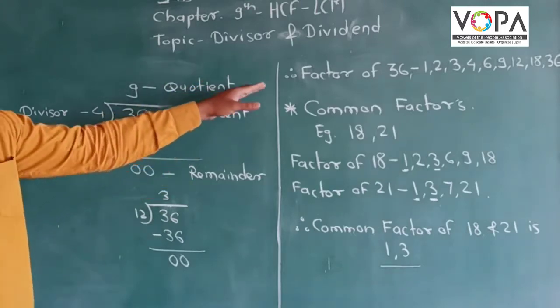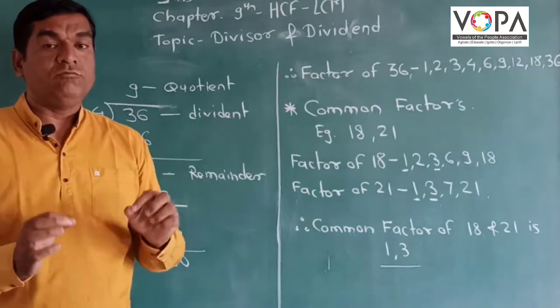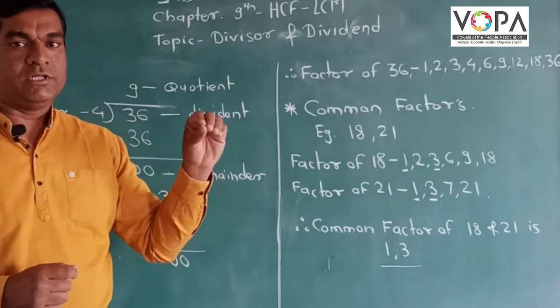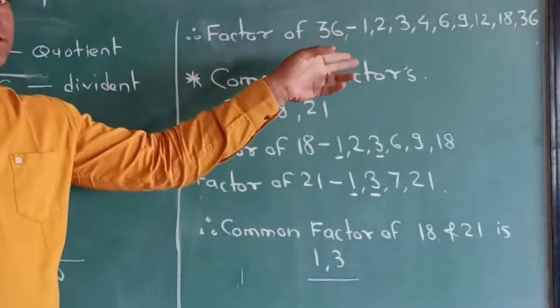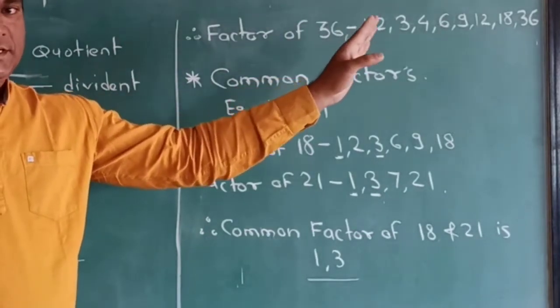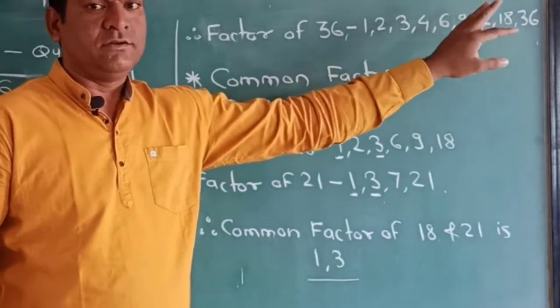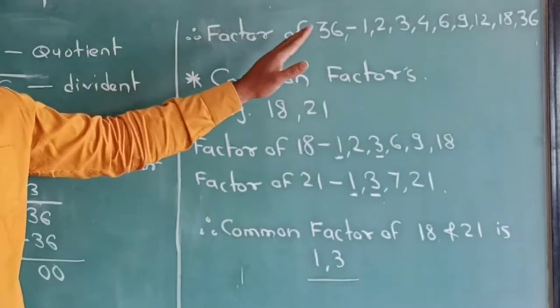Factors of 36 - how many factors do we get? 1 is the universal factor of any number. When you write the factors for any number, we start from 1. So 1, 2, 3, 4, 6, 9, 12, 18, and 36 are the factors of 36.